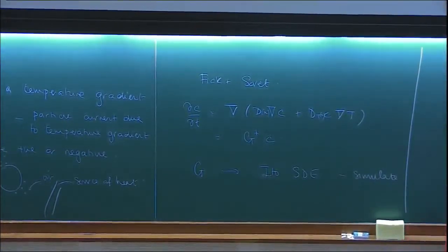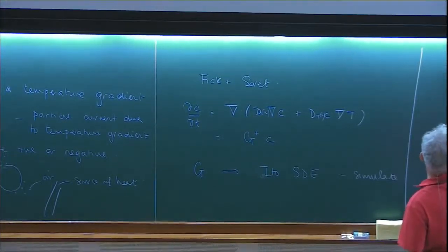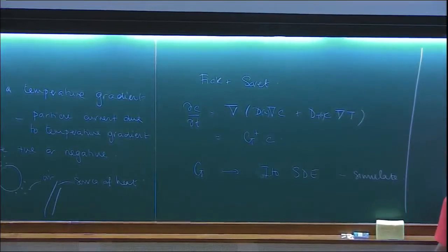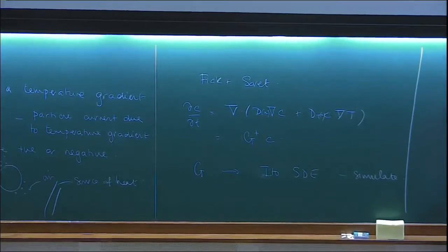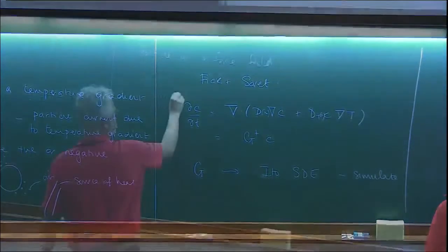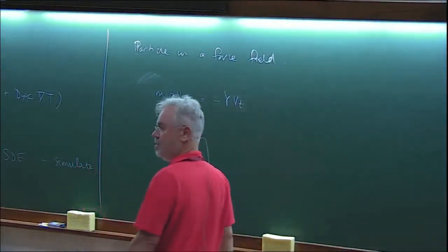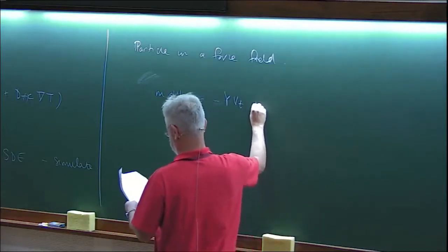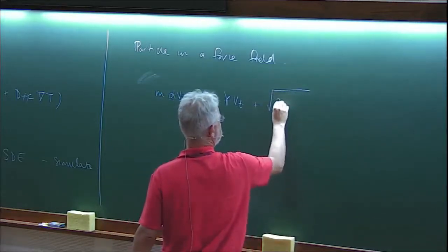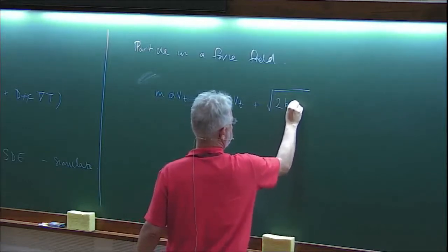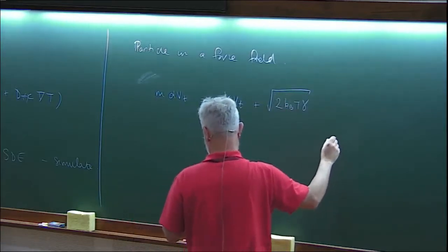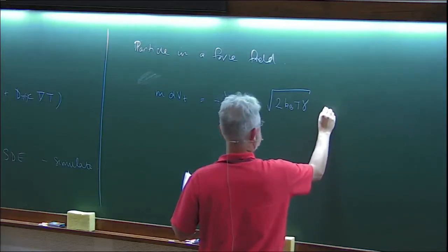You can write down many different models — active or otherwise — and always express them as stochastic differential equations. Instead of thinking about Fokker-Planck equations, which are generally quite difficult to solve, you can think in terms of the sample paths. Going back to a particle in a force field, the free particle equation was m dv = -gamma v dt plus the noise term sqrt(2 k_B T gamma) dB(t), which we worked out to give the Maxwell-Boltzmann distribution.